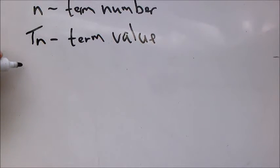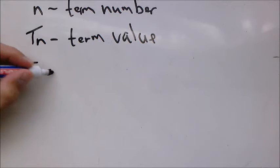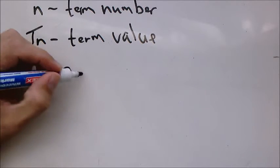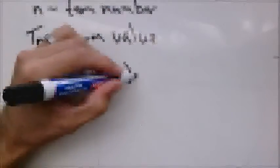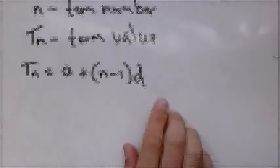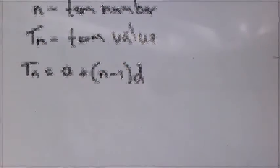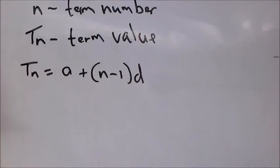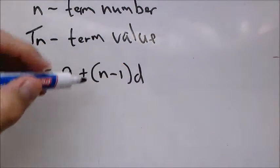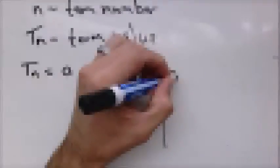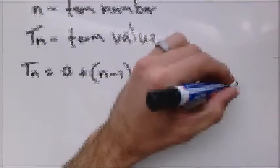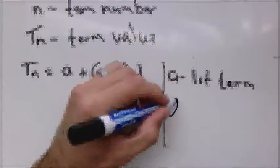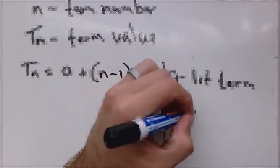How to calculate it or write it in a formula: Tn equals a plus bracket n minus 1 times d, where a is the first term and d is the constant difference.